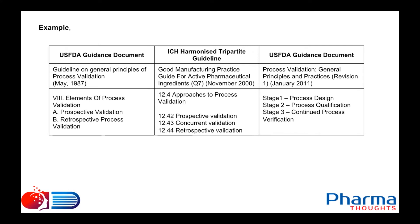So which validation shall I follow? If the regulation says only that my process has to be validated, and if I validate my process either using retrospective validation as mentioned in 1987, or as concurrent validation mentioned in 2000, or as per the three-stage approach mentioned in January 2011 — here comes the tricky situation. If we do the process validation, we are complying with the minimum requirements of the regulation, that is 21 CFR Part 211.